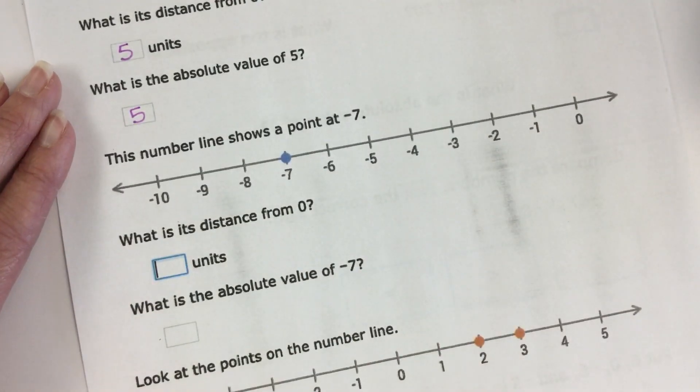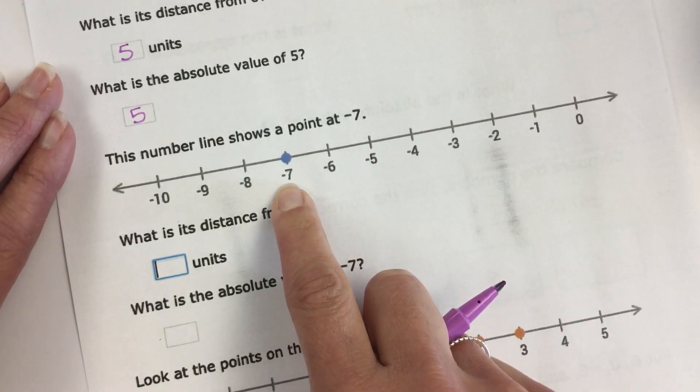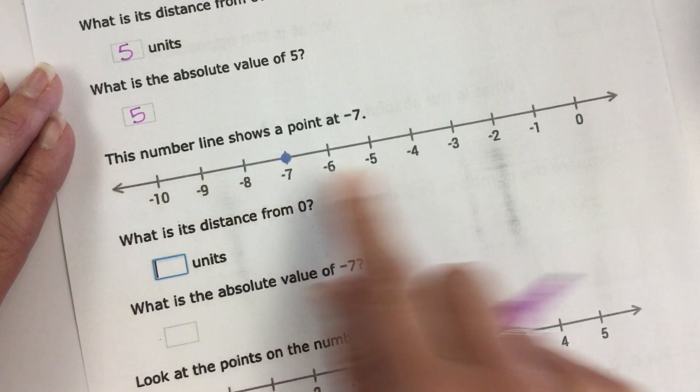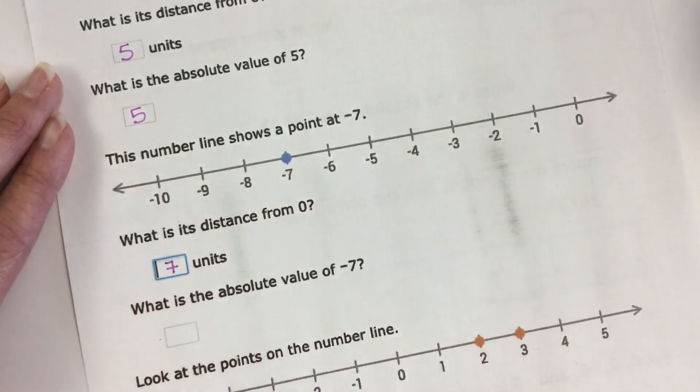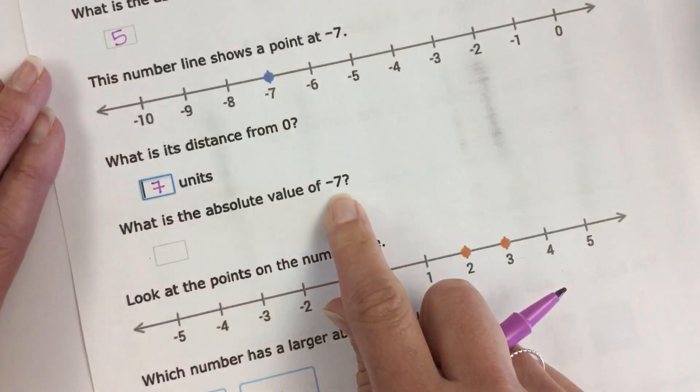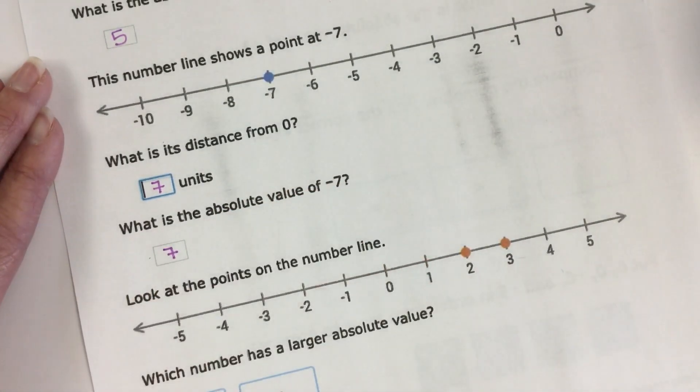Just another example here. This number line shows a point at negative seven. What is negative seven's distance from zero? Well even though it's negative, it's still located seven units from zero. That's why the absolute value of negative seven is positive seven, because it's seven units from zero.